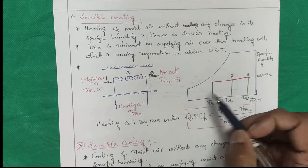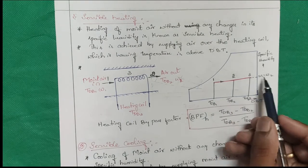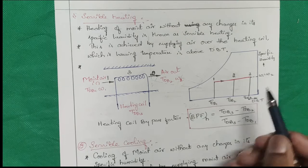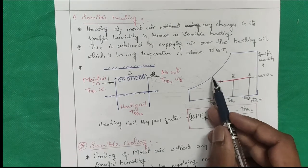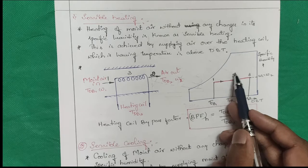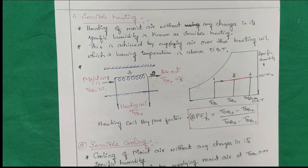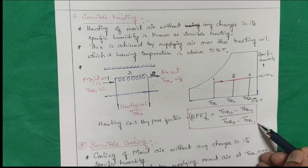On the psychrometric chart, you draw a horizontal line because specific humidity remains constant. The dry bulb temperature: one is the inlet temperature, this is the outlet temperature, and this is the coil temperature. Here you will also get the bypass factor — the heating coil bypass factor — which you determine with the help of this formula.